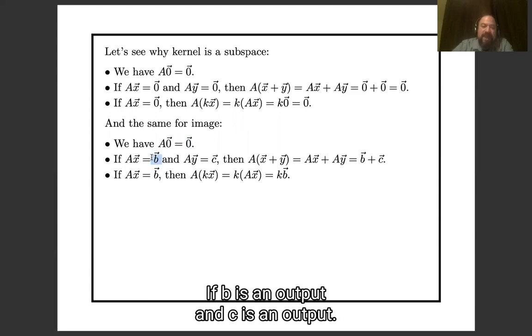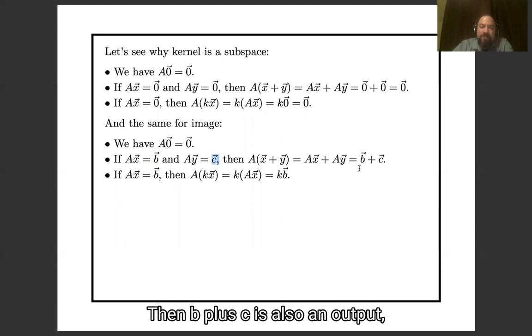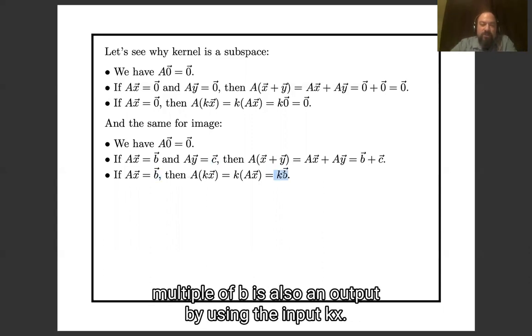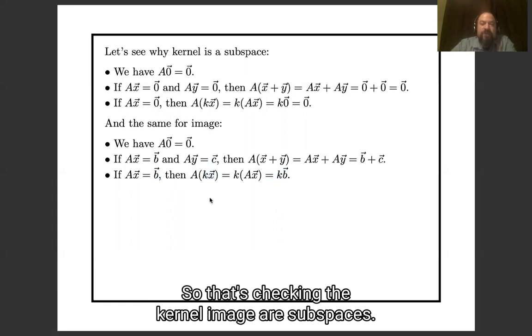If b is an output and c is an output, then b plus c is also an output, by putting in the inputs x and y. And then finally, if b is an output, then every scalar multiple of b is also an output, by using the input kx. So that's checking that kernel and image are subspaces.